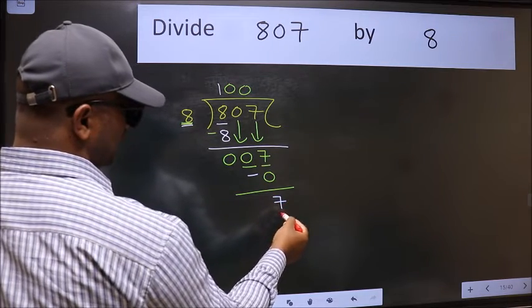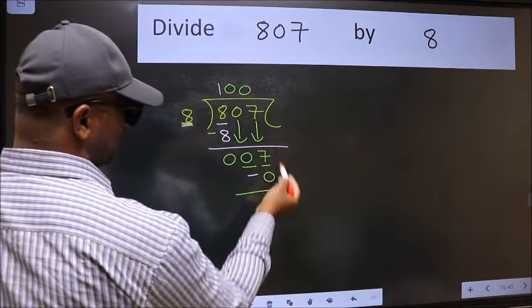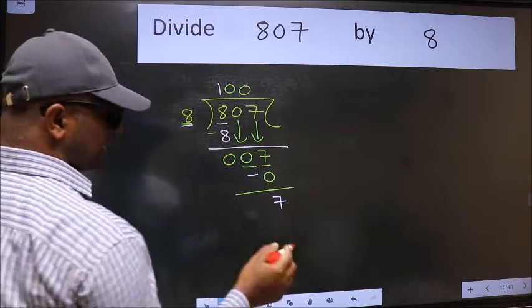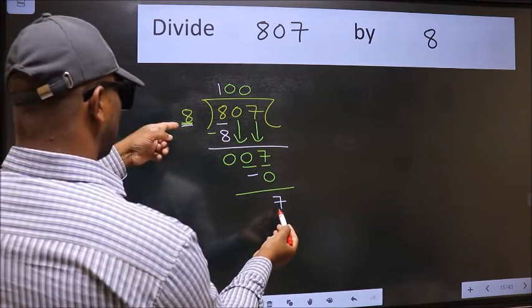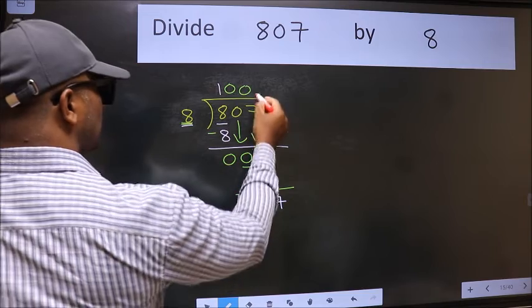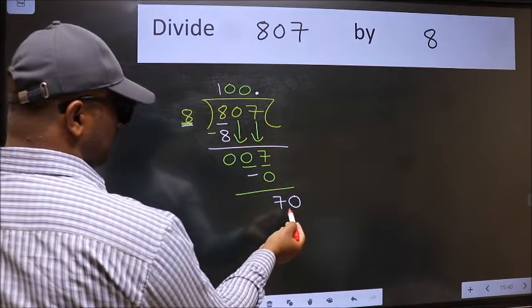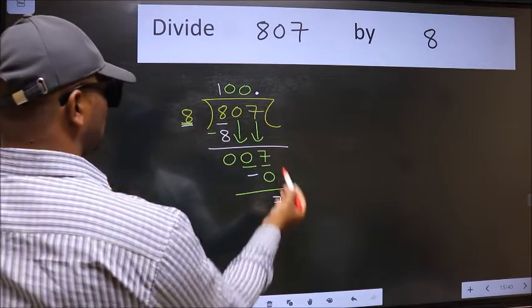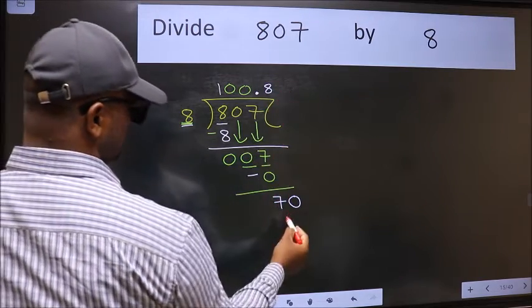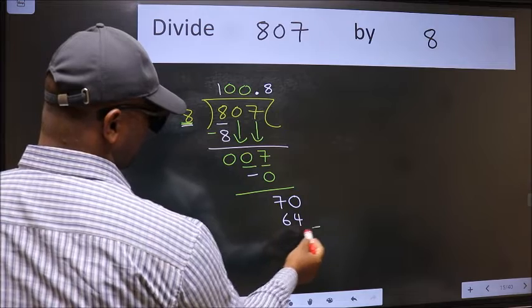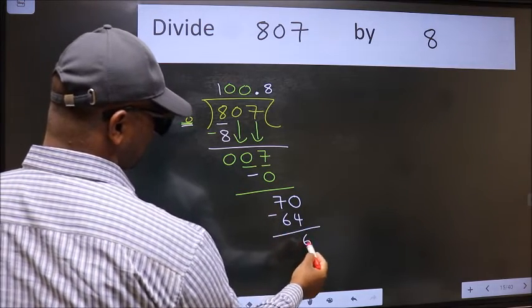Over here, we did not bring any number down, and 7 is smaller than 8. So now we can put dot and take 0. So 70. A number close to 70 in 8 table is 8 times 8, 64. Now we should subtract. We get 6.